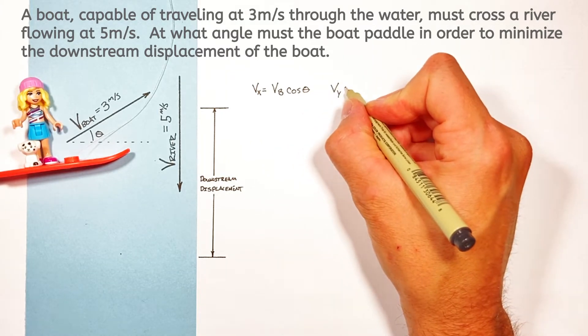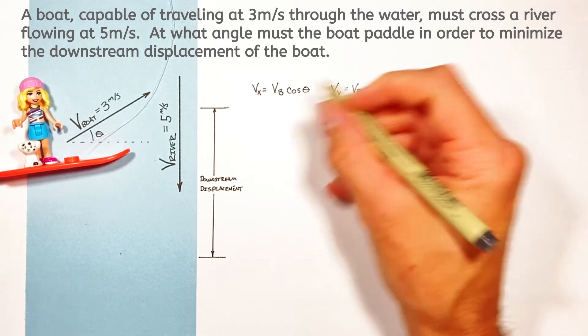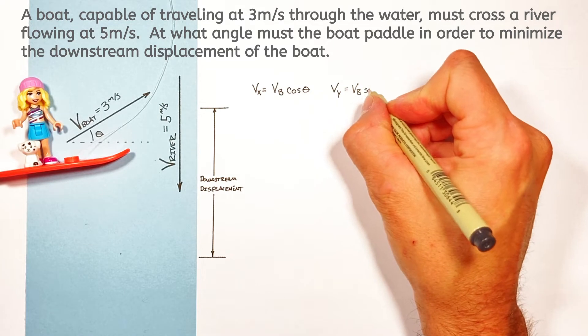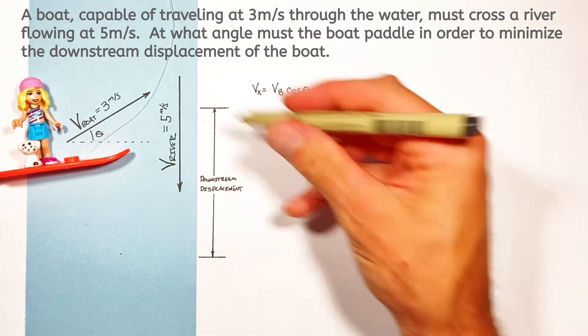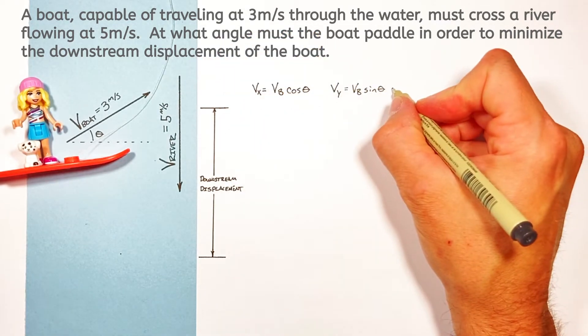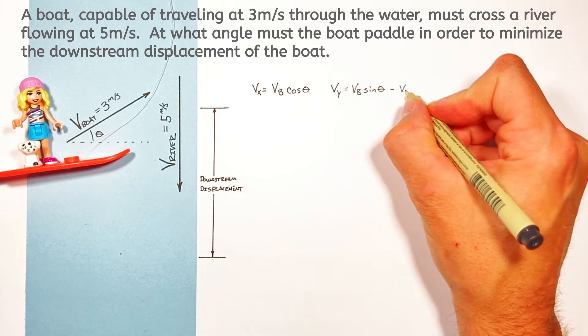In the Y axis we're gonna have the velocity of the boat times its upstream component, it's gonna be sine theta, but then there's the river back downstream. So we're gonna say that's minus the velocity of the river.